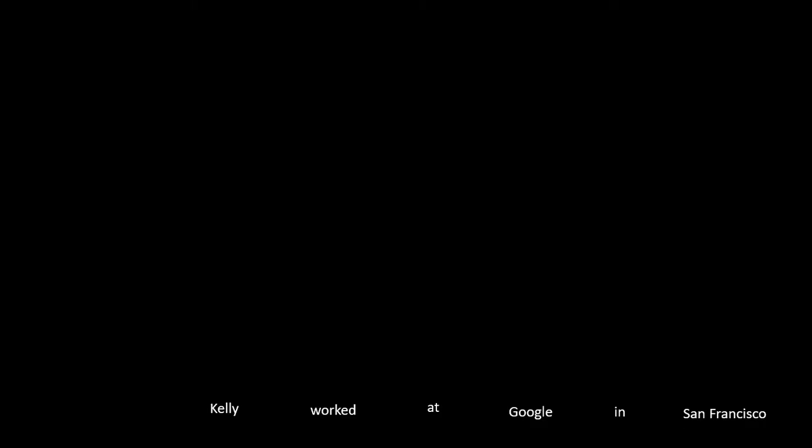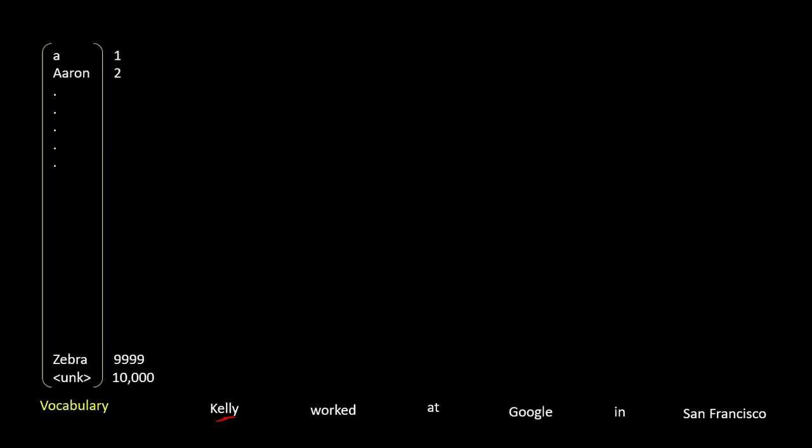In the last video I told you that we pass one word at a time, but computers do not understand words — they only understand numbers. So we cannot pass a word like 'Kelly' directly to our model. We need to convert each word into a number or a token. For this, we can create a vocabulary of words, limiting it to, say, 10,000 English words.